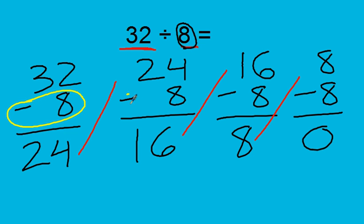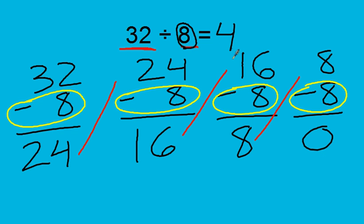So I subtracted 8 once, twice, three times, four times. I subtracted 8 four times to get to 0. So that means 32 divided by 8 equals 4. So I start with 32, and if I'm dividing it by 8, I'm seeing how many times am I subtracting 8 to get to 0. And that's 4.